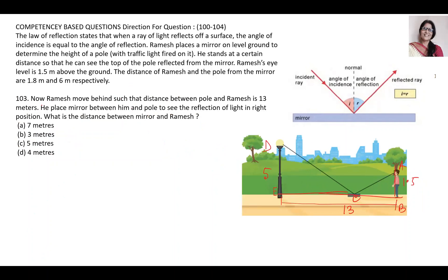Next question. Now Ramesh moves behind such that the distance between pole and Ramesh is 13 meter. Now from the pole DE, Ramesh is standing at a distance of 13 meter. That means EB is now 13 meter.